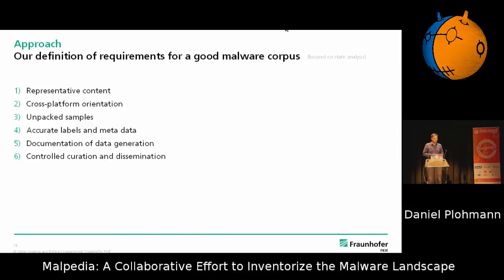For us, we basically came down to six things: representative content, cross-platform coverage, unpacked samples, accurate labels, documentation — explaining how we got to the data — and finally controlled curation and dissemination. I want to ensure the format that we've been using to set up this corpus stays the same and stays intact. Also, dissemination should be limited — it's not that you can just go to the website and download everything, but we employ some basic vetting to ensure the data is not flowing widely.